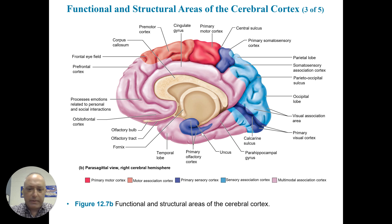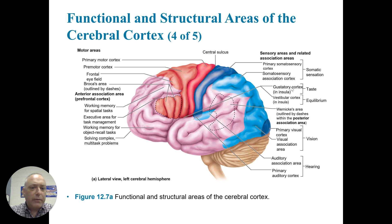Just a few other notes: for the somatosensory cortex, there is sensation, taste, and equilibrium. In the primary visual cortex there's vision, and then deep within we have the auditory cortices for hearing.